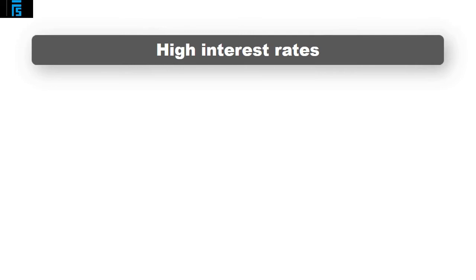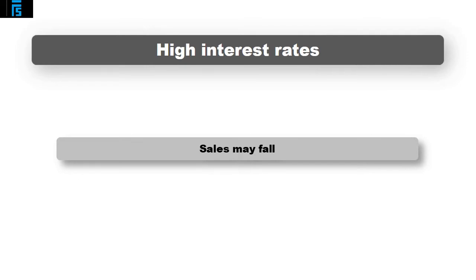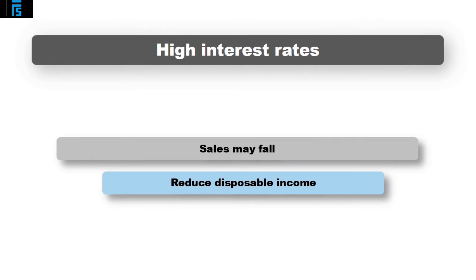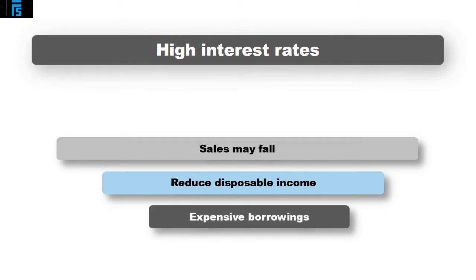High interest rates can impact on companies in a number of ways. Sales may fall as consumers save instead, and this is likely to affect companies providing luxury items more than those providing necessities. The cost of borrowing for consumers will increase, which may reduce disposable incomes — for example, the cost of existing loans may take up a bigger proportion of their income as interest rates rise — and this will make it harder for consumers to afford large items for which loans may be required. The company's own borrowing will be more expensive, which may make investment in infrastructure more expensive.